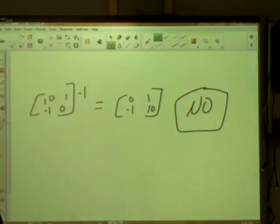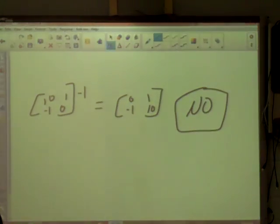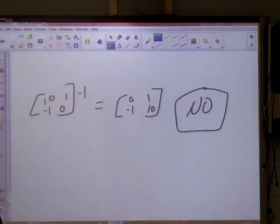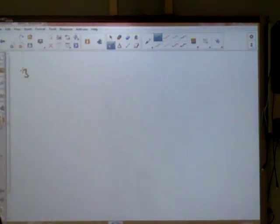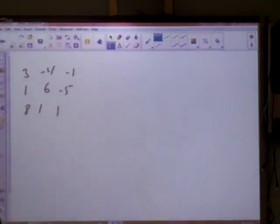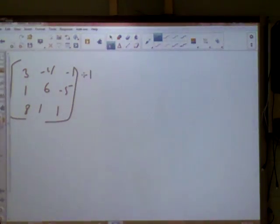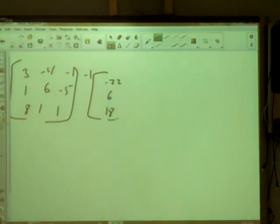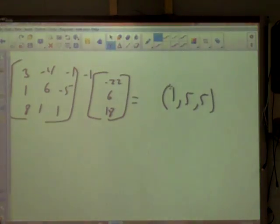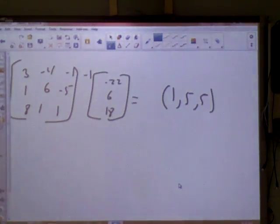Thirteen. It says use Kramer's rule. I don't know about Kramer except he was on Seinfeld so I didn't use his rule. I put that in the matrix in my calculator. I got a 3, a negative 4, a negative 1. I had a 1, a 6, and a negative 5. And then I had an 8, a 1, and a 1. The inverse of that times the answer one, which is negative 22, 6, and 18. And the grand finale gave me 1, 5, 5.